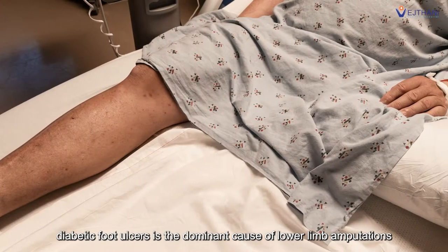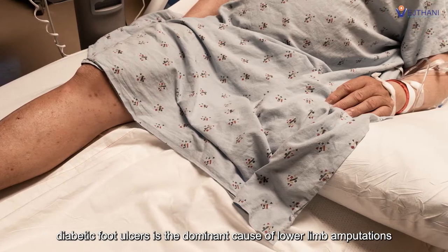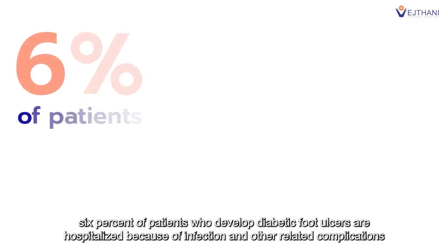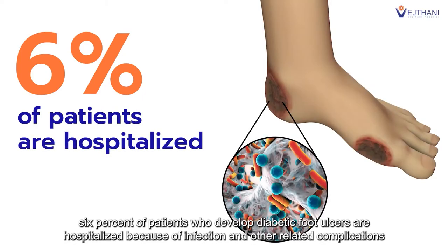Diabetic foot ulcers is the dominant cause of lower limb amputations. 6% of patients who develop diabetic foot ulcers are hospitalized because of infection and other related complications.